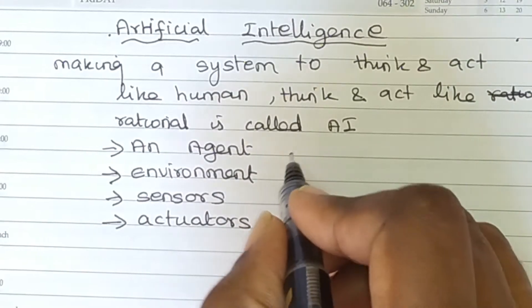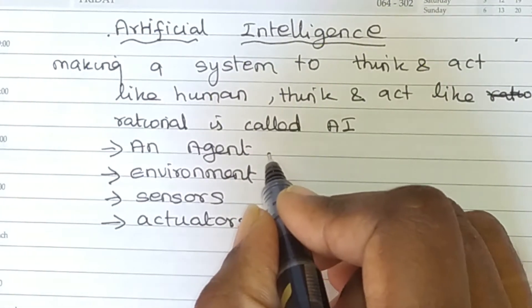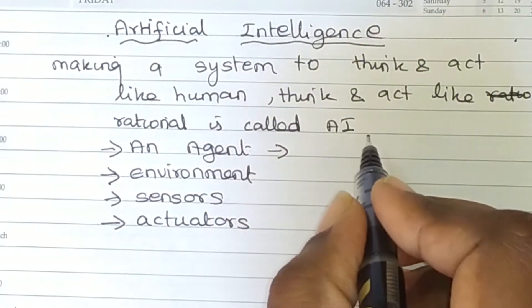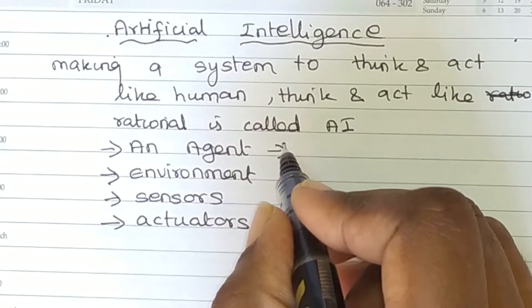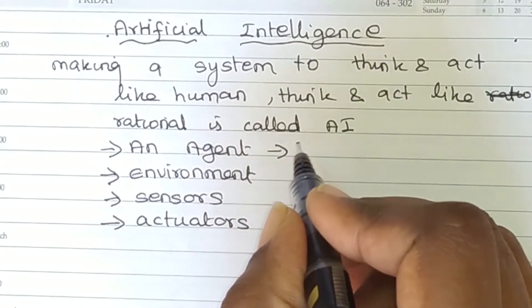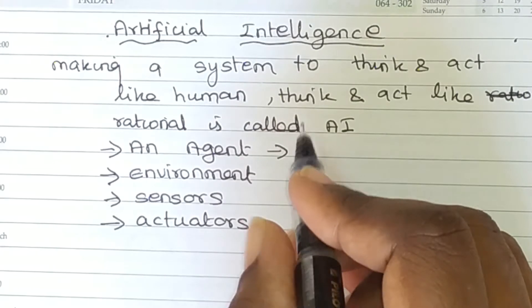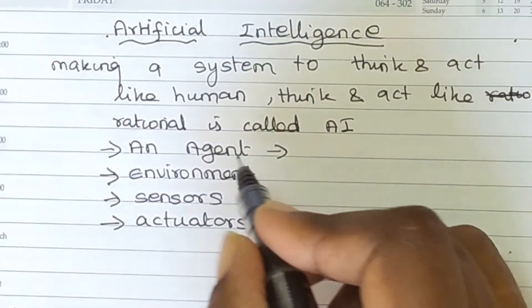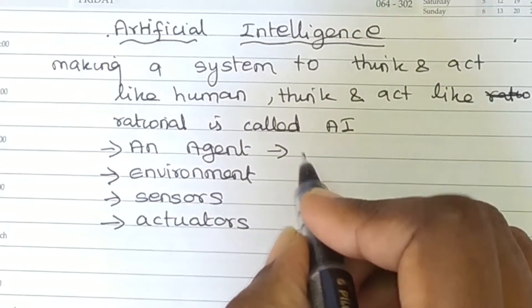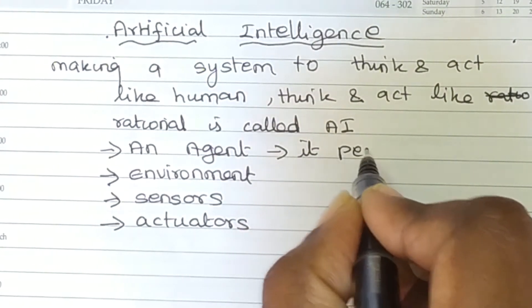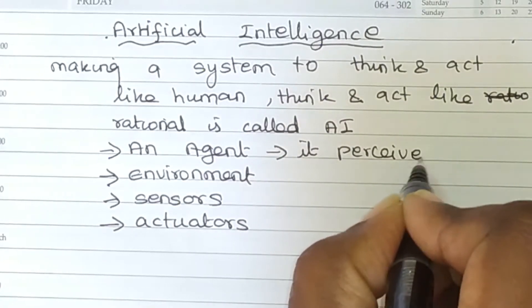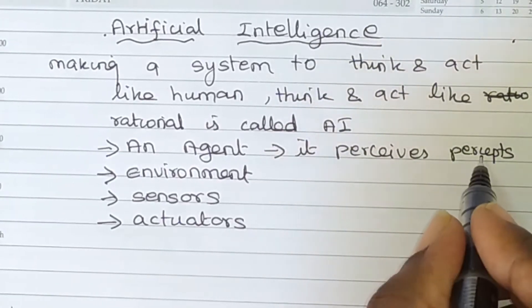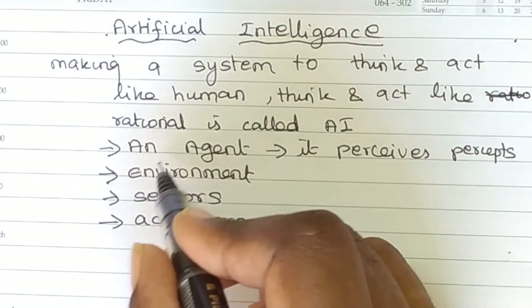First, we are going to look at the agent. Anything that acts is called an agent. The agent perceives input from the environment.